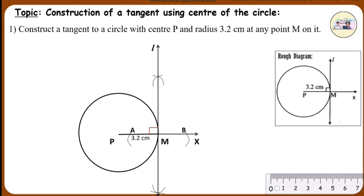Therefore, line L is the required tangent to the circle at point M.